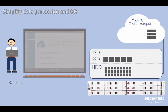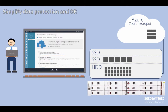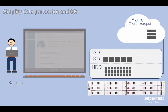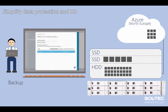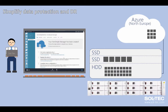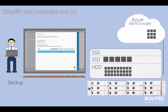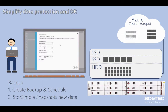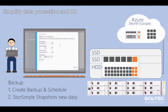StoreSimple for backup: snapshot policies and schedules are defined and set, and then StoreSimple snapshots new data to the cloud. Three copies are retained locally and three are written to a second data center within region. For each backup schedule, StoreSimple just snapshots the new data and copies this to the cloud. Recovering data is simply a case of cloning a volume and navigating to it on a file server.